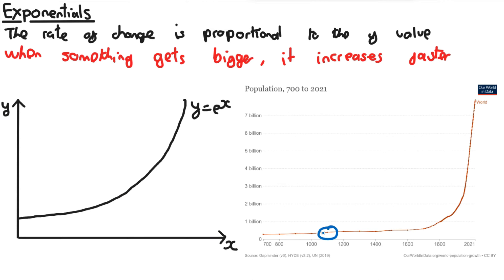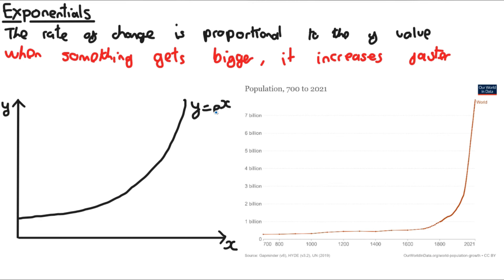At earlier points, the population is really low — less than 1 billion — so there are fewer people, fewer babies being born, and the population increases slowly. But when the population reaches about 6 billion, there are far more people, more babies being born, and the population increases faster. The bigger the population, the more babies born, and the faster the population increases. This graph looks a lot like y equals e to the power of x, and that makes sense because the rate of change is proportional to the y-value — the condition needed to use e to the power of x as a model.